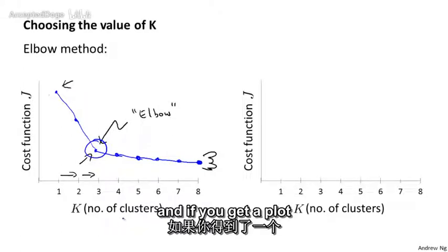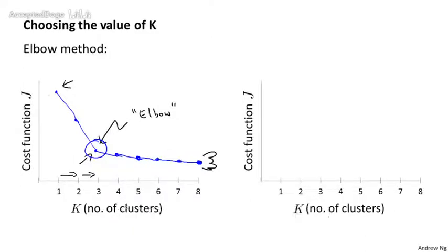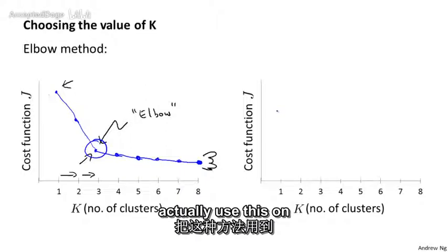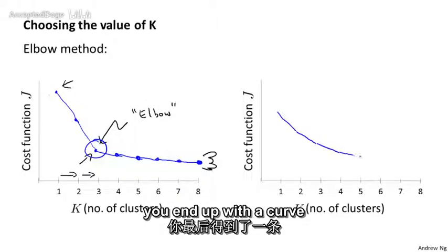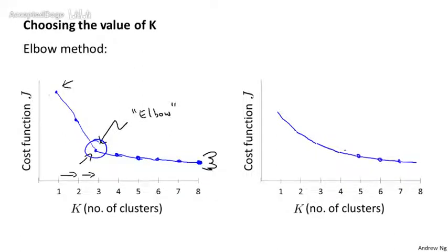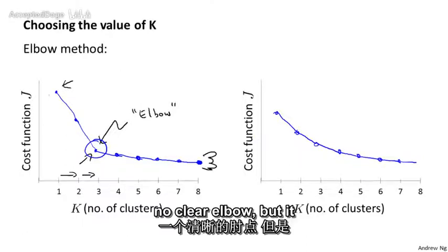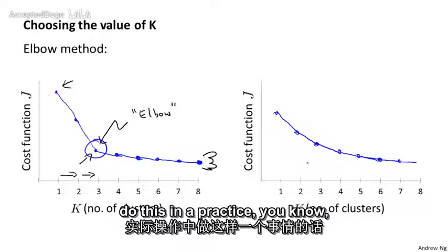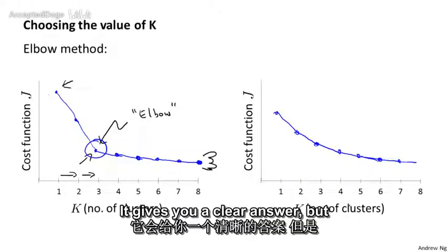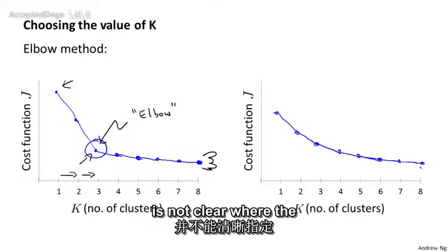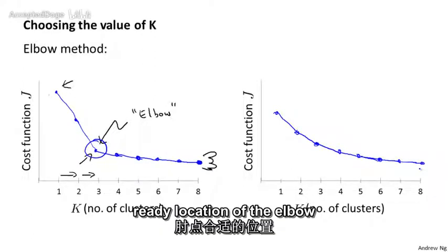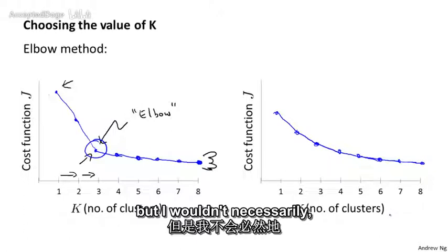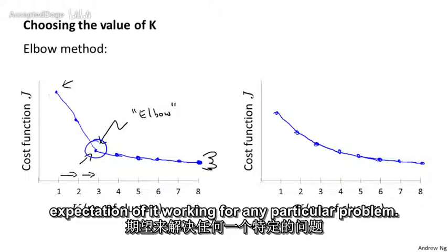If you apply the elbow method and get a plot that clearly shows an elbow, that's pretty good and a reasonable way of choosing the number of clusters. However, the elbow method isn't used that often. One reason is that if you use it in practice, fairly often you end up with a curve that looks much more ambiguous — the distortion continuously goes down with no clear elbow. Maybe three is a good number, maybe four, maybe five. If your plot has a clear elbow, great — but just as often the elbow location is unclear, making this method unreliable. It's worth a shot, but don't have very high expectations of it working for any particular problem.